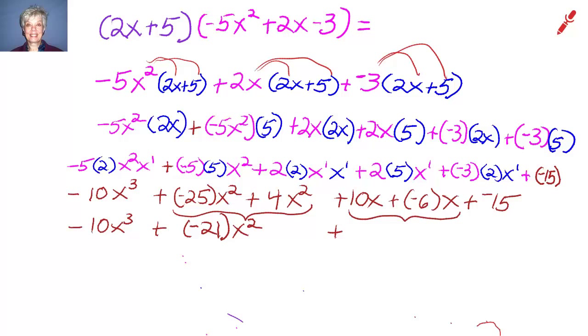We combine 10x and -6x, and that will give us 4x. And then -15 brings up the rear. So our answer is -10x³ - 21x² + 4x - 15.